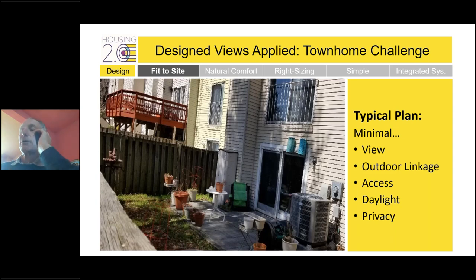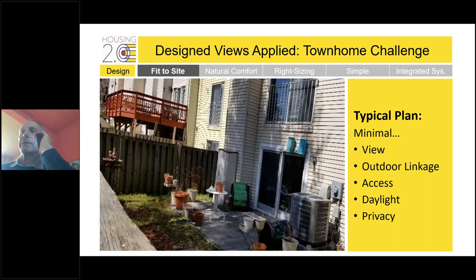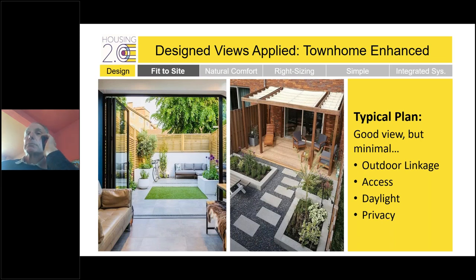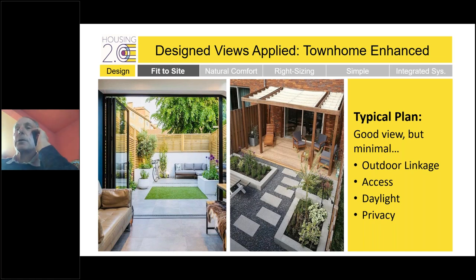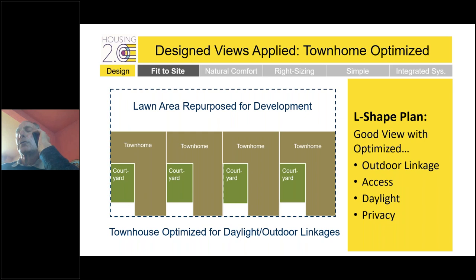This least-optimized townhome configuration results in a throwaway space — hardly used, with a clear lack of privacy, lack of view, and lack of access and daylight. You can offer solutions though, and expert solutions are transformative. You can achieve a good view from rooms off the backyard, but you still have minimal linkage, minimal access and daylight, and minimal privacy. Saying view is a high priority in your design strategy is the key mindset shift.